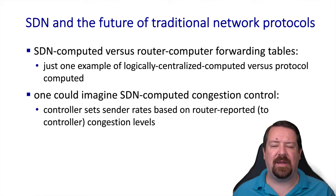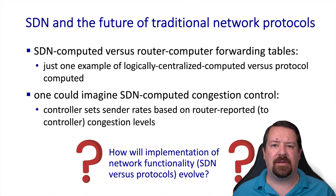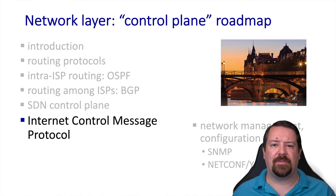We've been talking about SDNs being able to compute routing tables centrally and the advantages that might offer over distributed routing, but that's just one example. One could also envision using SDNs to provide congestion control rather than relying on endpoints to make guesses. But fundamentally, it's not clear at this point how future SDN services will evolve and how they will interact with established network protocols. That wraps up our discussion of the SDN control plane. In the next video, we'll be looking at internet control messaging and network management.